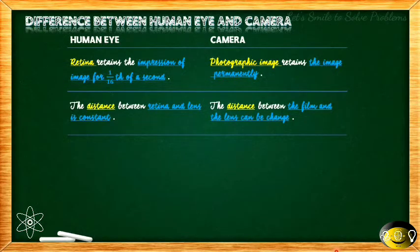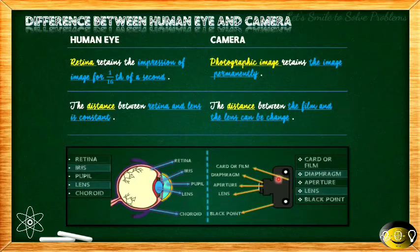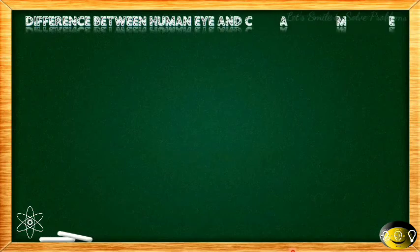The second difference is that the distance between the retina and lens is constant in the human eye and cannot be changed — it is fixed. Whereas in a camera, the distance between the film and the lens can be adjusted. We can focus and change this distance in the camera.